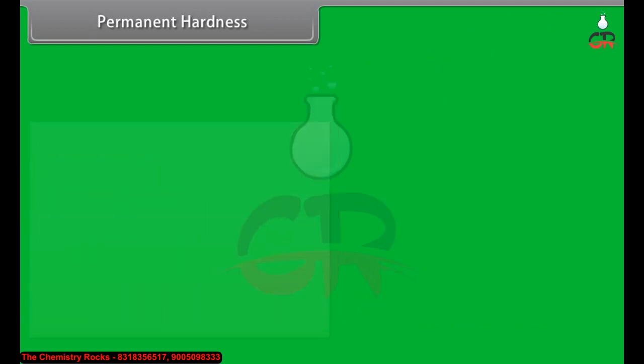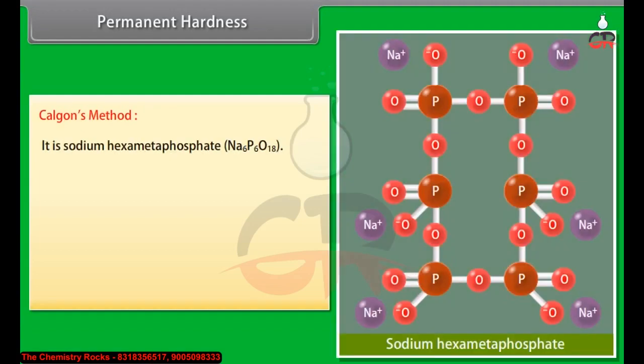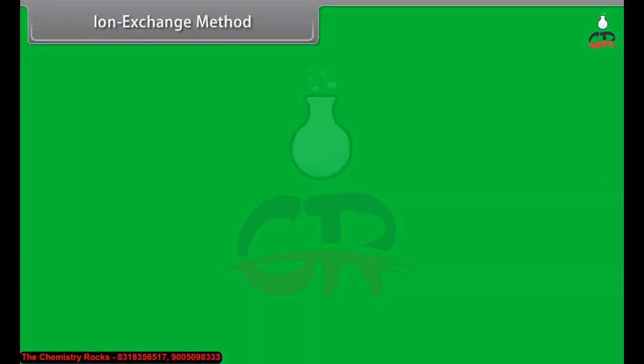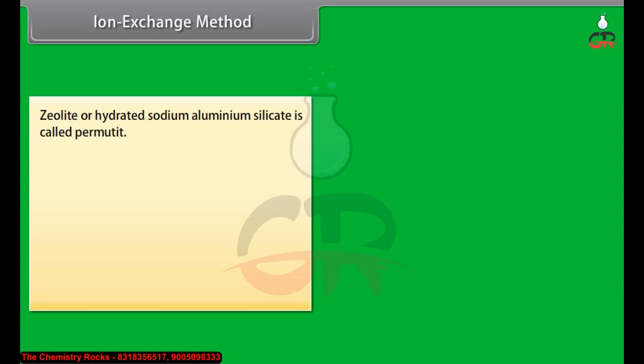Calgan's method uses sodium hexametaphosphate. The complex anion keeps the Mg2+ and Ca2+ ions in solution. Ion exchange method: zeolite or hydrated sodium aluminum silicate, called permutate, NaAlSiO4·3H2O, is used to remove Ca2+ and Mg2+.